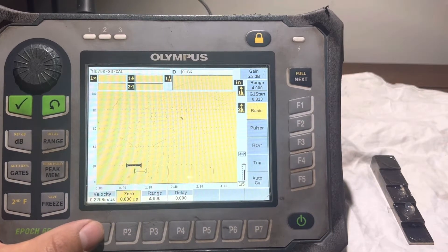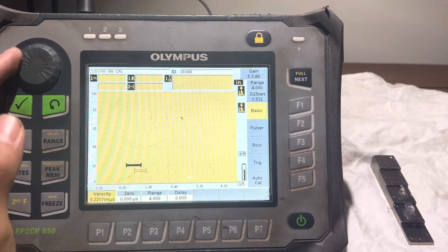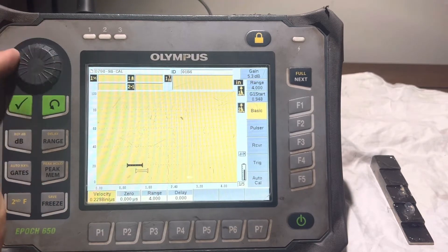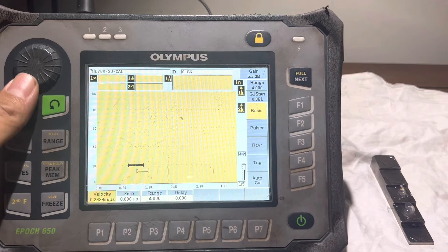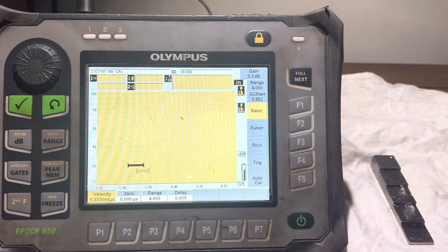I'm going to be using a cal block that is carbon steel. One of the first steps is to get the velocity in place. It should be somewhere around 2330.